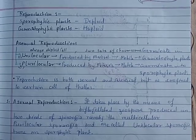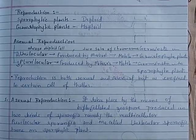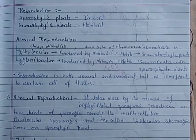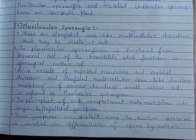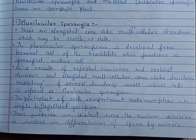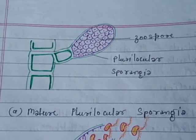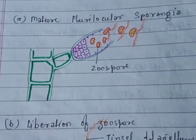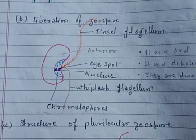Reproduction in Ictocarpus. There are two types of reproduction. First, asexual reproduction — including the plurilocular sporangium, mature plurilocular sporangia, liberation of zoospores, and the structure of plurilocular zoospores.